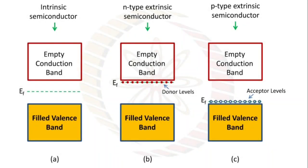Now we have to see the position of Fermi energy level, that is Ef, for intrinsic semiconductor, n-type and p-type semiconductor. For intrinsic, it is just halfway between empty conduction band and filled valence band. For n-type semiconductor, it is near the empty conduction band, and for p-type it is near the filled valence band.